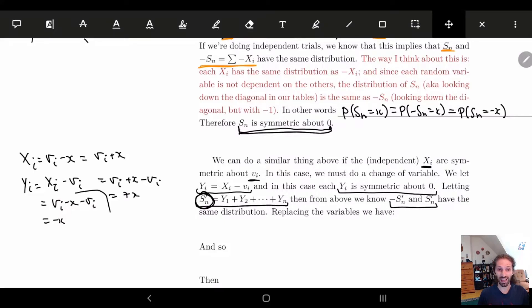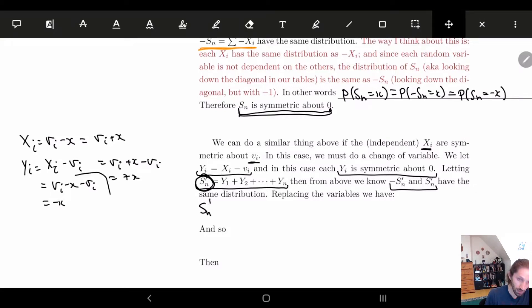So what does sn look like, right? So sn prime, this is what? This is equal to x1. So y1 here, I'm converting to x1 minus v1. And then I have x2, so I have plus x2 minus v2, plus x3 minus v3. I guess I'll hide this for now. All the way up to x, I have xn minus vn.